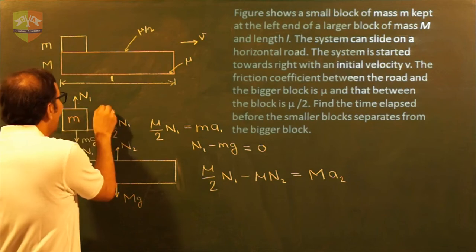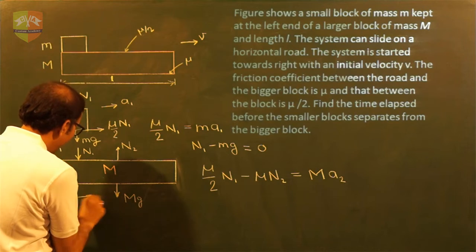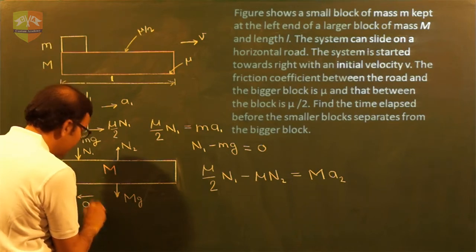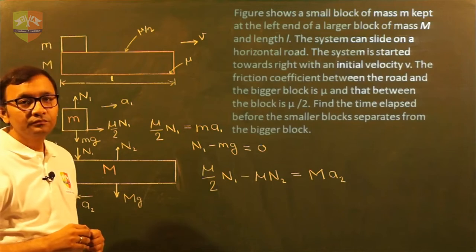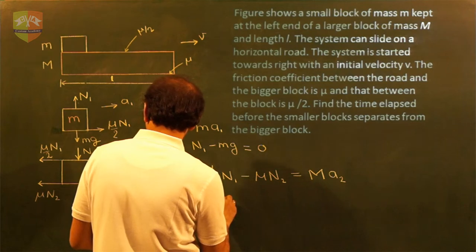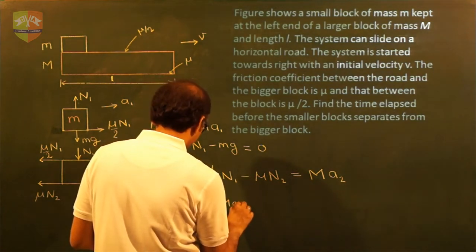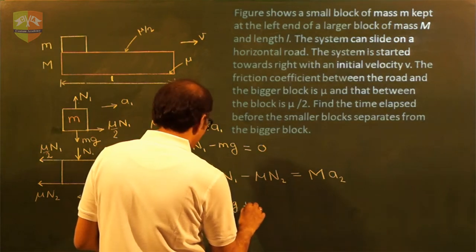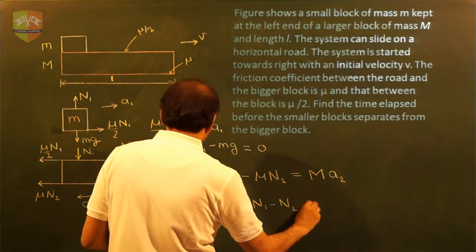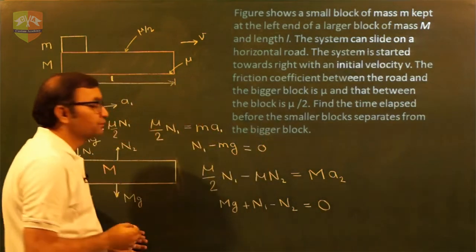So acceleration of small m will be in this way. Let us call this as A1 and for capital M, acceleration is backward direction. We are calling it as A2. Along the vertical direction, we will get mg plus N1 minus N2 is equal to 0.